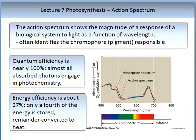Action spectra are very useful to photobiologists. They show the magnitude of response of a biological system to light as a function of wavelength. The image shows an action spectrum indicating the chromophore pigment responsible for light absorption and where light is being absorbed — between 400 and 500 nanometres and again between 650 and 690 nanometres. Quantum efficiency is nearly 100%, meaning almost all absorbed photons engage in photochemistry. Energy efficiency is about 27%; only about a quarter of the energy is stored, with the remainder converted to heat as waste.